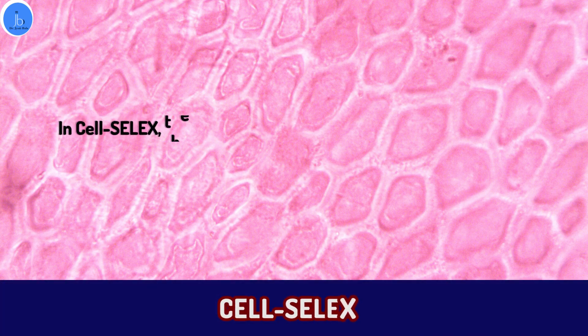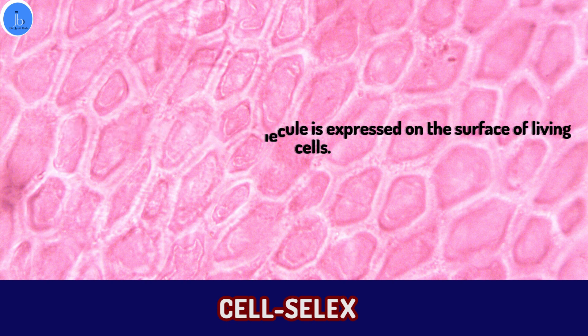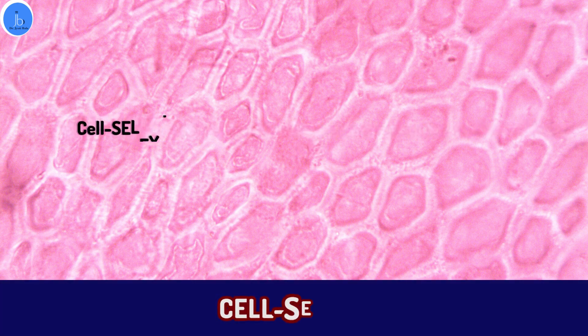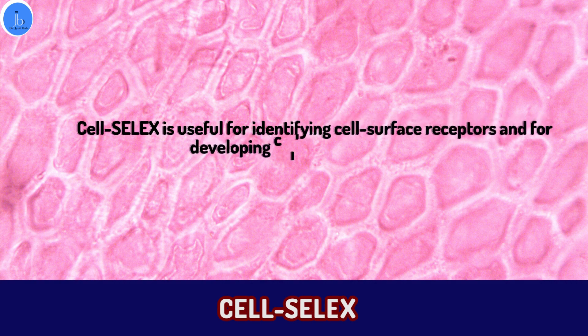Another type of SELEX is Cell-SELEX. In Cell-SELEX, the target molecule is expressed on the surface of living cells. The nucleic acid library is then incubated with the cells and the molecules that bind specifically to the target are selected and amplified. Cell-SELEX is useful for identifying cell-surface-based receptors and for developing cell-specific aptamers, which has a role in targeted drug delivery.